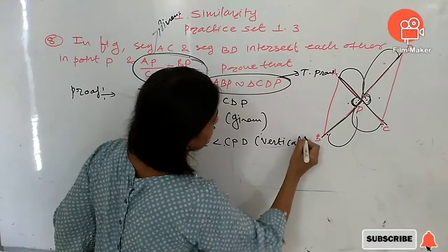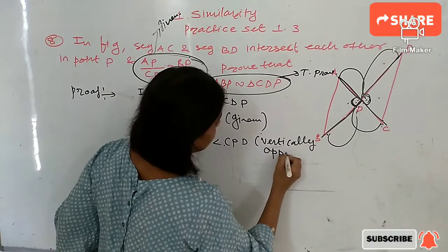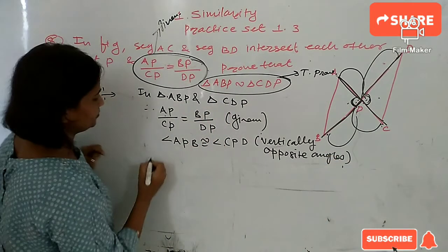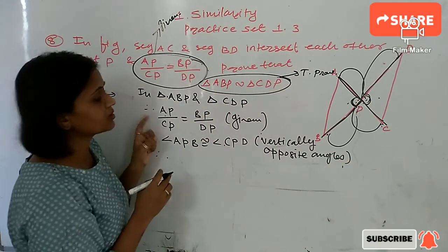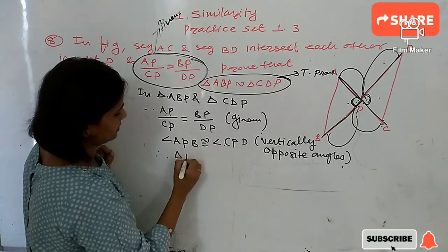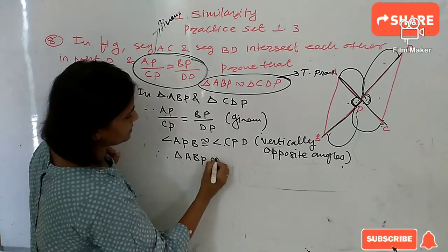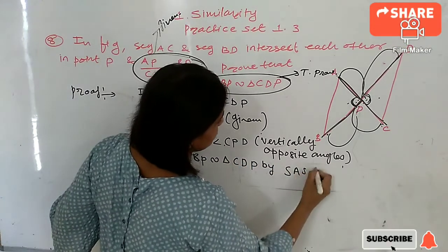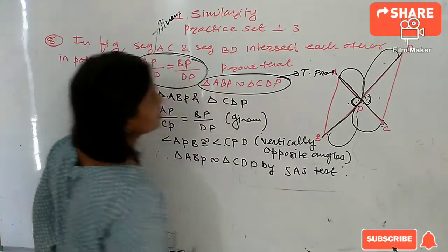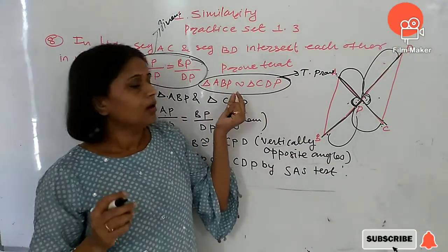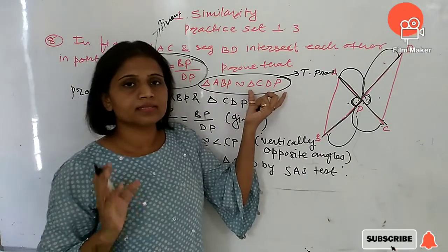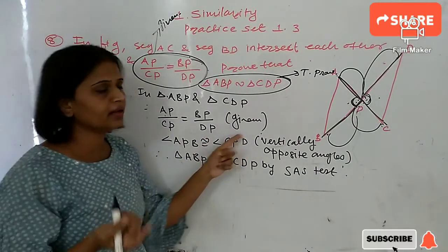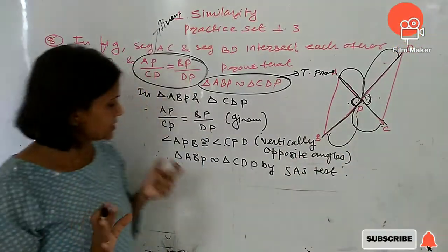These are vertically opposite angles — angle APB is congruent to angle CPD. Therefore, this is the condition for the Side-Angle-Side test. Therefore, triangle ABP is similar to triangle CDP by the Side-Angle-Side test.